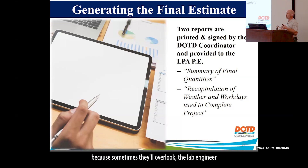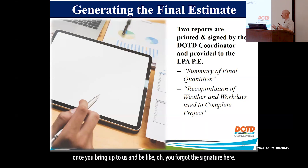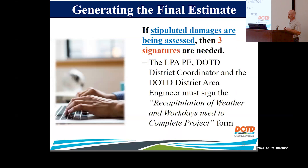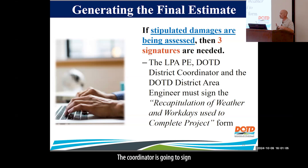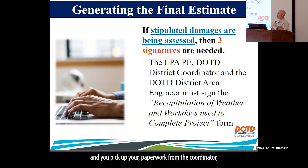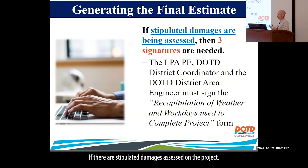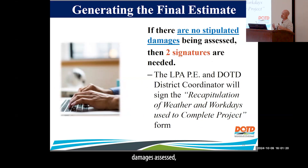Sometimes the lab engineer will overlook the signature page and forget to sign, and then you have to go back to the lab, get it signed, and resubmit. If stipulated damages are assessed on your recap of weather and workdays, you're going to need three signatures: you sign it, the LPE signs it, the coordinator signs it, and the district area engineer signs it. If there are no damages assessed, you only need two signatures — you and the coordinator.